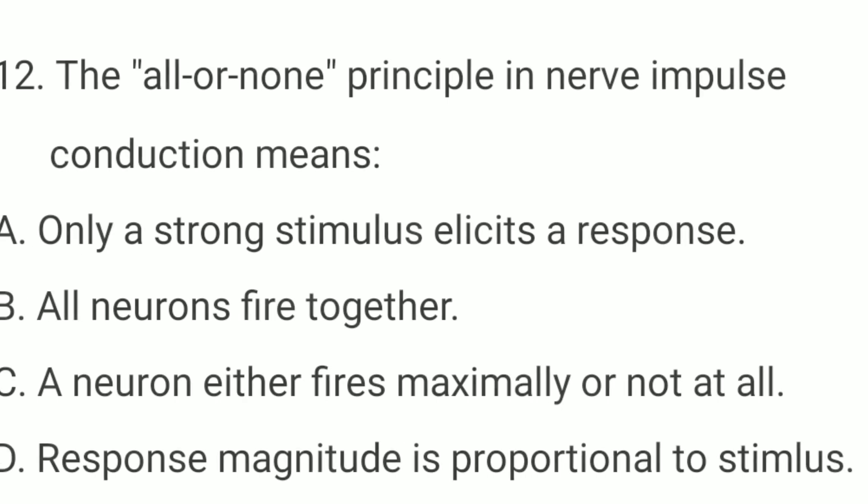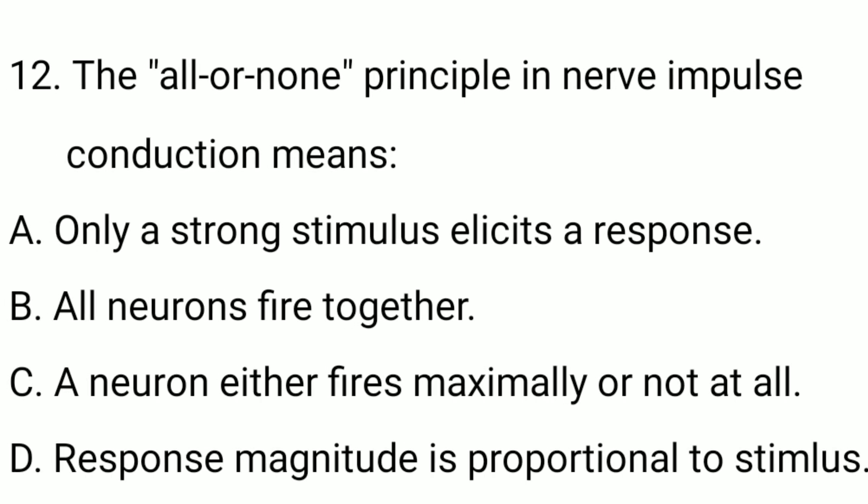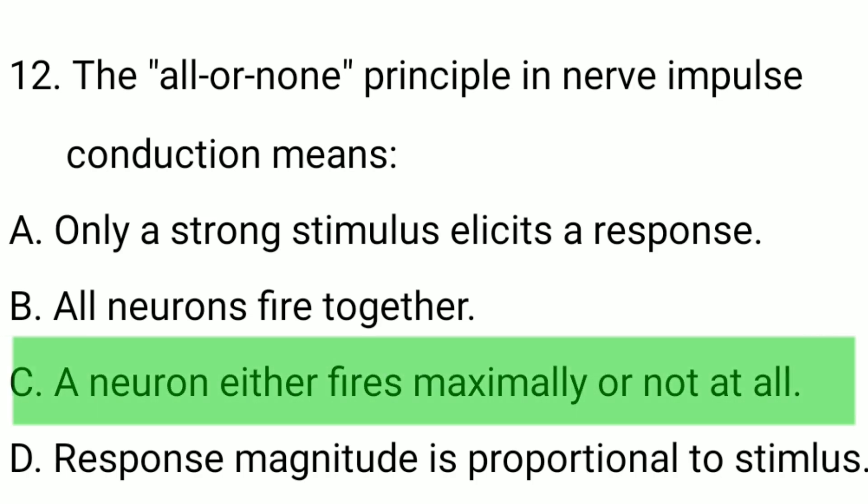Question number twelve: the all-or-none principle in nerve impulse conduction means? The correct option is option C — a neuron either fires maximally or not at all.